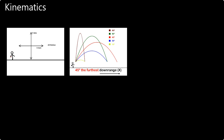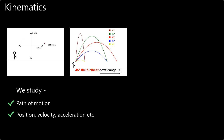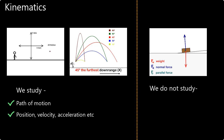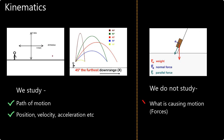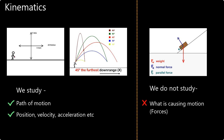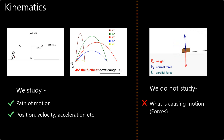The branch of physics where we study the path of motion, including position, velocity, acceleration, etc., is called kinematics. In kinematics, we are not concerned with what is causing the object to move. That part is covered under dynamics, where we will study forces and their effect on bodies and motion.